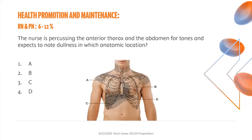Here is a practice question focused on health promotion and maintenance. The nurse is percussing the anterior thorax and abdomen for tones and expects to note dullness in which anatomic location. Using the figure, decide if it's A, B, C, or D. 66% of you chose the correct answer — option C. Percussion involves tapping the body with the fingertips to set underlying structures in motion and produce a sound. Dullness would be noted over the liver, located in the upper right quadrant of the abdomen. Resonance is the percussion tone heard between the ribs. Dullness on percussion indicates the presence of an organ.